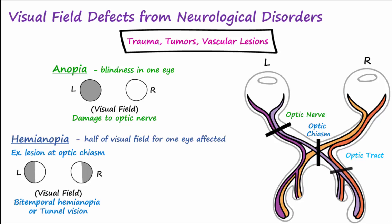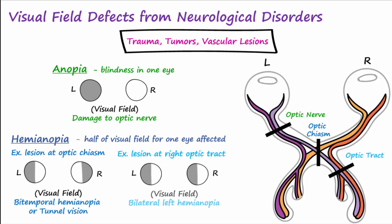If there was a lesion in the optic tract, it would affect visual information coming from both the left and right visual fields. If it was a right optic tract lesion, the resulting disturbance would be bilateral left hemianopia, or loss of the left side of the visual field of both eyes. You could also describe it as a loss of the temporal visual field in the left eye and loss of the nasal visual field in the right eye.